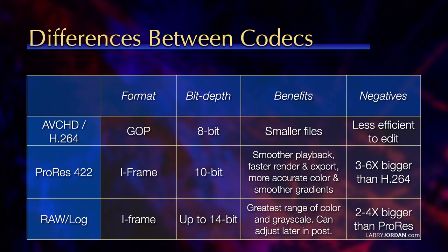ProRes 422 is I-frame-based. It's 10-bit, which gives us smoother playback because of the I-frame. Faster render and export, also because of the I-frame. More accurate color and smoother gradients because of the 10-bit. But it creates files which are 3 to 6 times bigger than H.264.